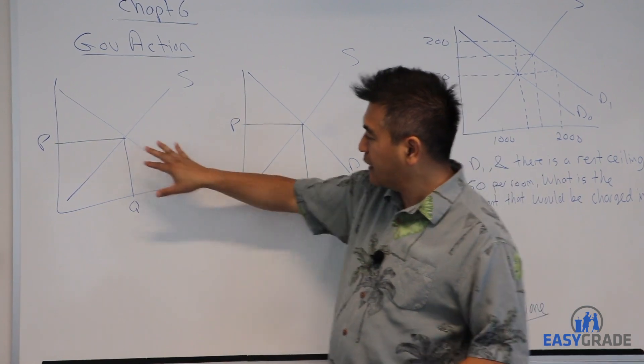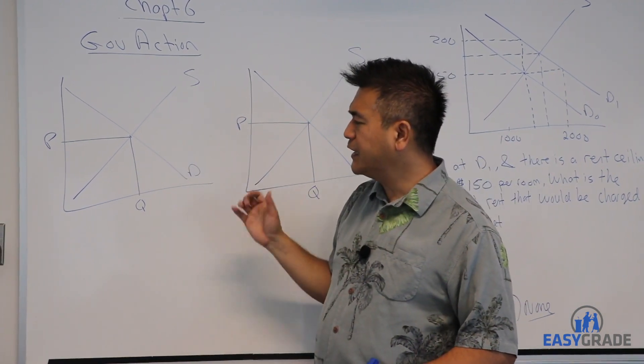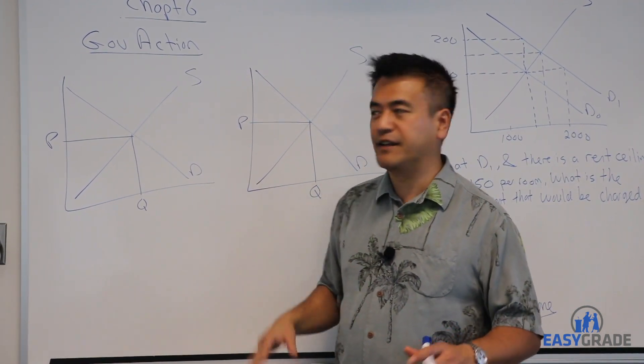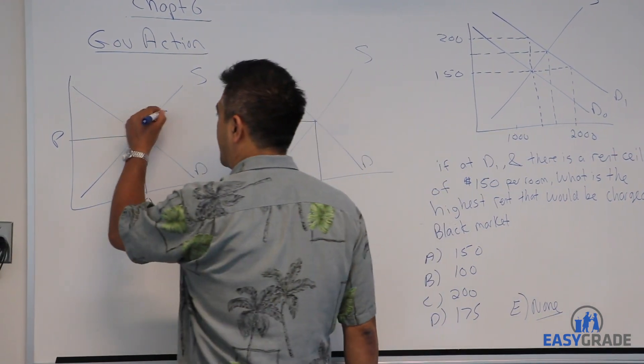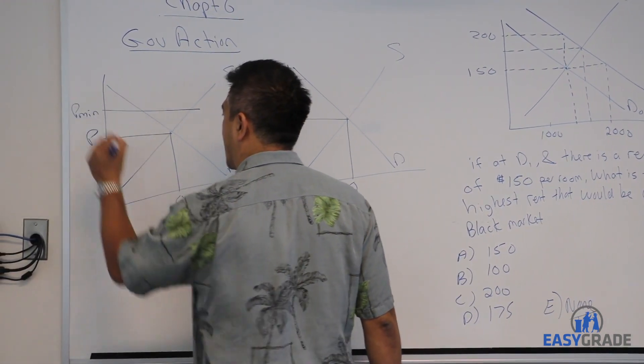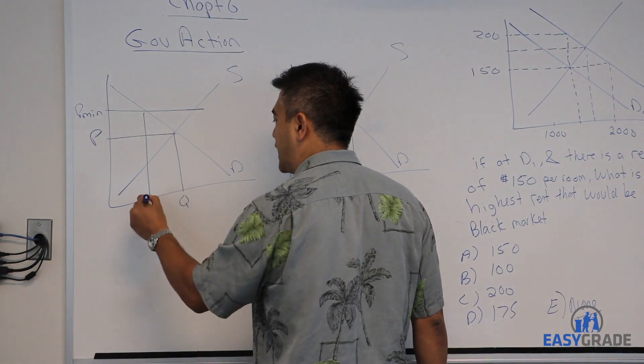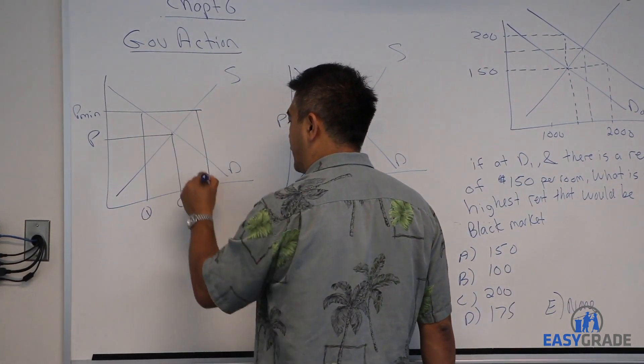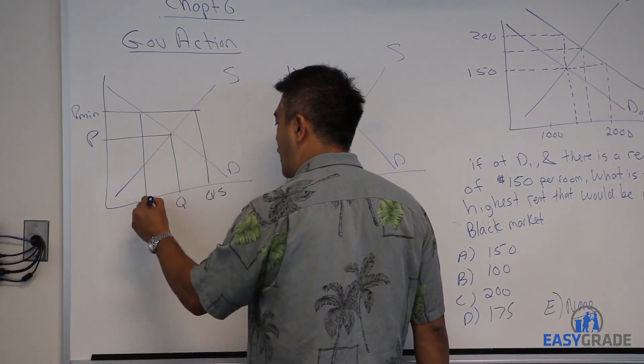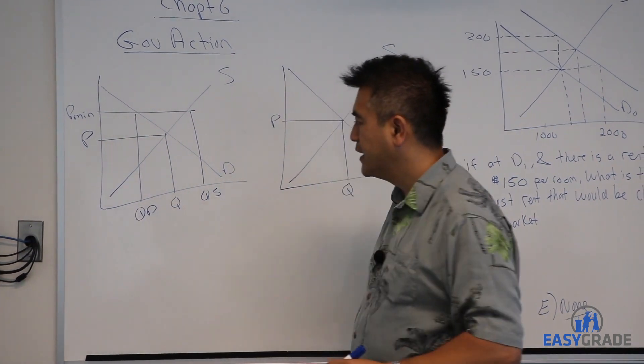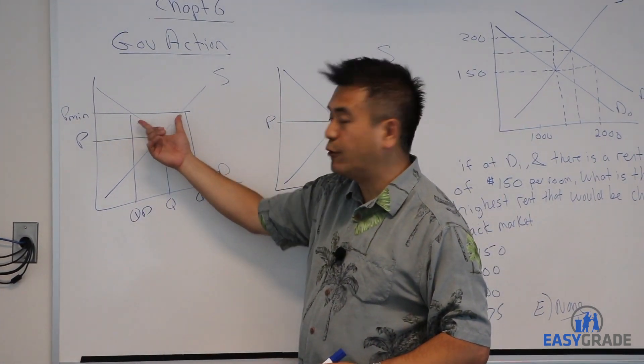For example, if the market is in equilibrium, the government can impose a minimum price. In other words, a price floor. This is a minimum price and that means the quantity supplied is here and the quantity demanded is there. And that means there will be a surplus.